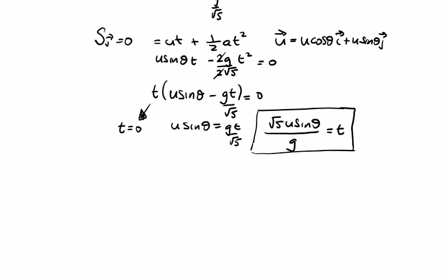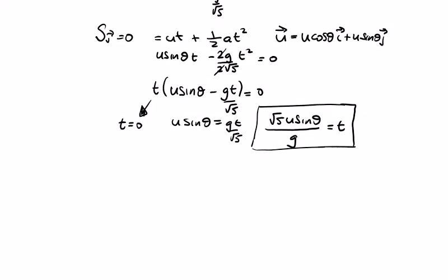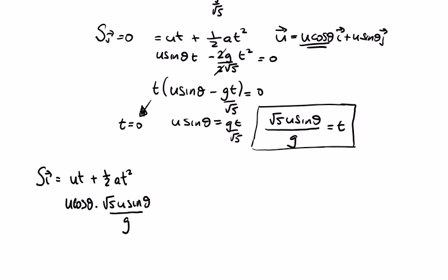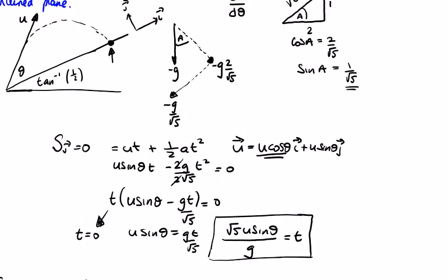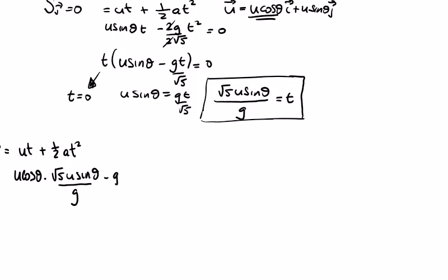Now we find the range in the i-direction using s = ut + ½at². The initial velocity in the i-direction is u cos θ, so we have u cos θ multiplied by the time root 5 · u sin θ over g, plus ½ of the acceleration in the i-direction, which is minus g over root 5.